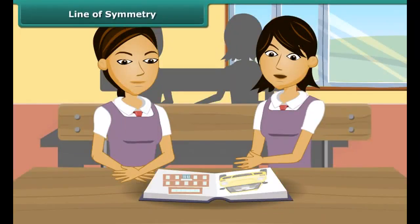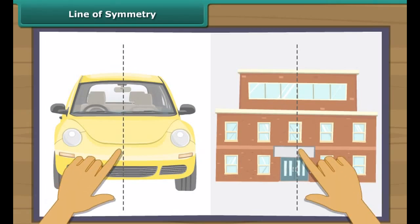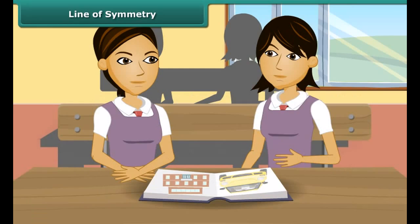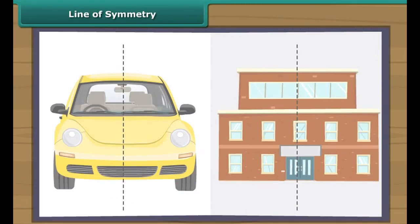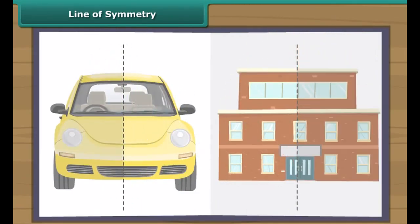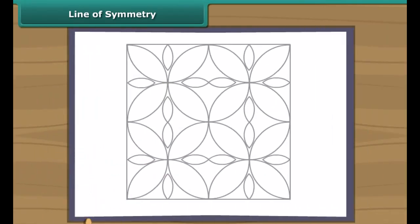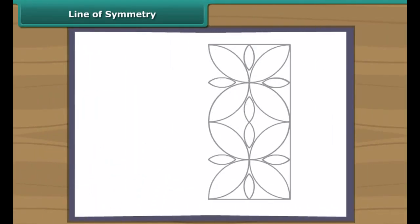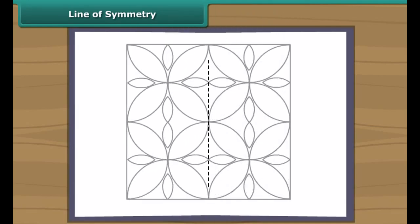Look at these figures. The line you can see is the line of symmetry of these figures. Line of symmetry? What is that? When we fold the figure about this line of symmetry, we will see that the two parts of the figure are coinciding. Let's take this figure now. When we fold this figure from the center, we will see that the two parts of this figure are coinciding.